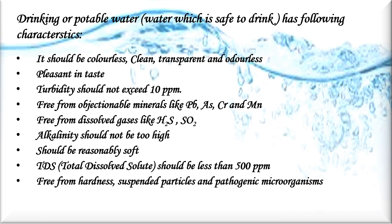Potable water is water that is safe to drink. The characteristics of drinking or potable water are: it should be colorless, clean, transparent, and odorless with a pleasant taste. Turbidity should not exceed 10 ppm. It should be free from objectionable minerals like lead, arsenic, and manganese. It should be free from dissolved gases like sulfur dioxide. Alkalinity should not be too high, and it should be reasonably soft. The total dissolved solids (TDS) should be less than 500 ppm, and it should be free from hardness, suspended particles, and pathogenic microorganisms.